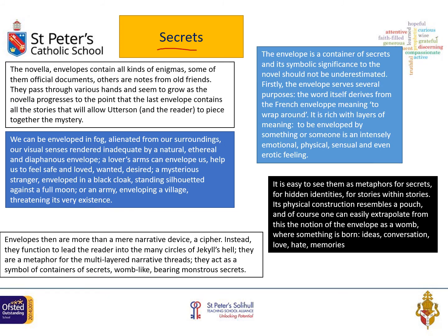One of the important motifs is the theme of secrets — secrets within secrets within secrets. We get a whole series of enigmas, mysteries, and official documents that aren't quite trusted. Utterson is kept out of the will at the beginning of the novel. There is constant repetition of fog, which clouds judgment. Envelopes containing secrets appear throughout — letters handed to characters that they're afraid to open. This metaphor of secrets and hidden identities, stories within stories, recurs throughout the novel.